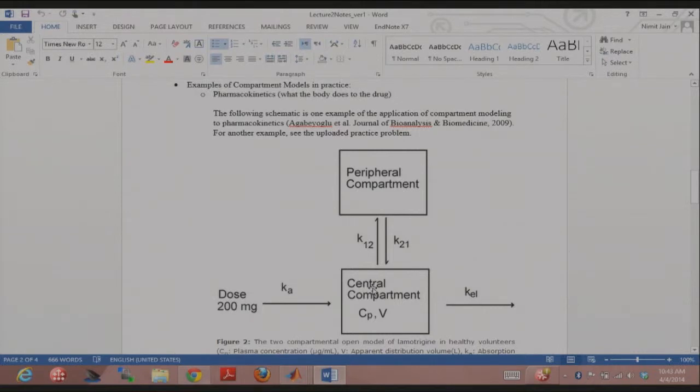Where now you can go in and start writing differential equations. So DCP over DT will have an input related to KA, an output related to KL and K12, and another input related to K21. And you can write differential equations for this, and then when you integrate those differential equations, if you're making measurements in the central compartment, you'll get a solution for the central compartment. You can fit it to data that you might have.